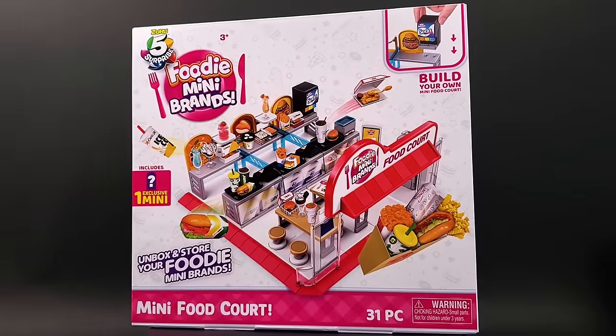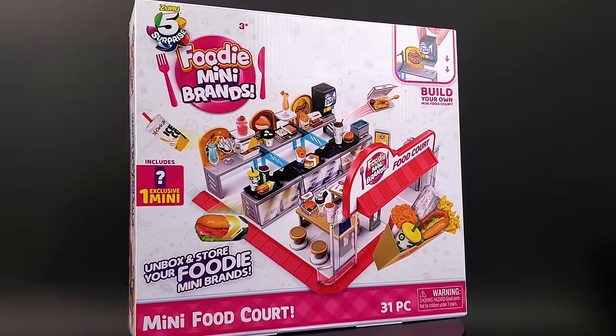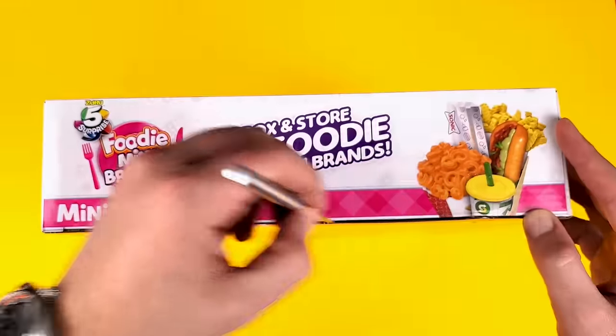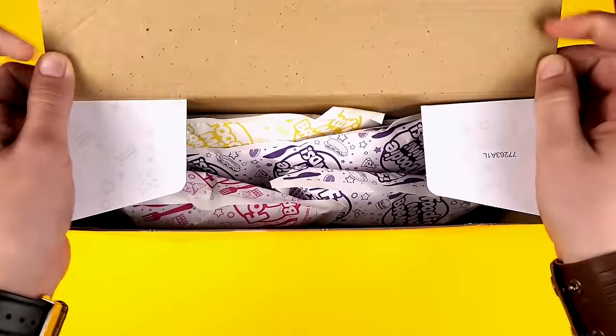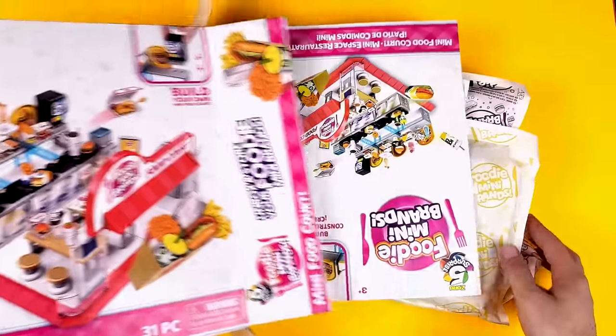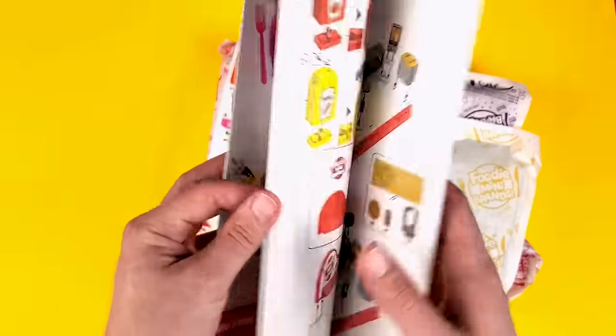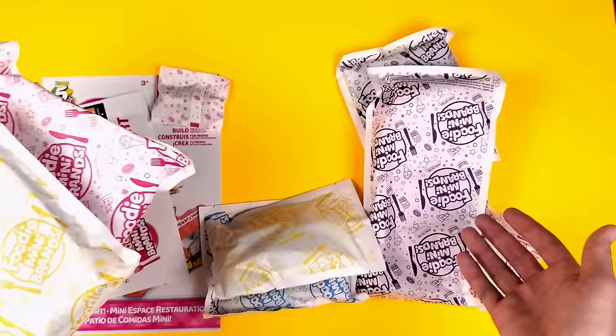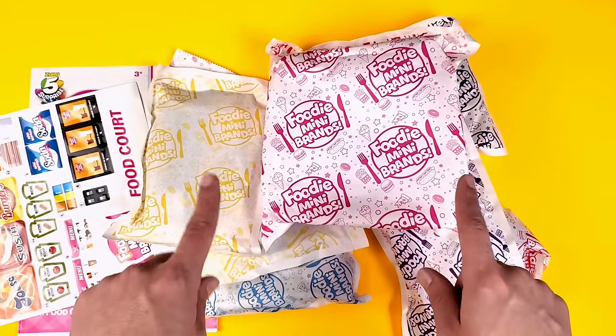Hey guys, today we'll build this new Foodie Mini Brands Food Court. I got it on Amazon for $14.99, which is pretty cheap when you consider that two Foodie balls will cost you $16.98. We have here the instructions manual, the stickers, and all the packages.